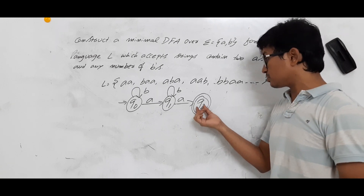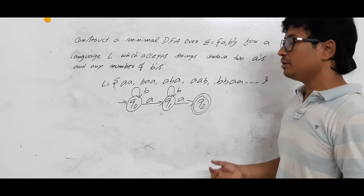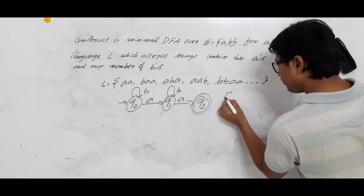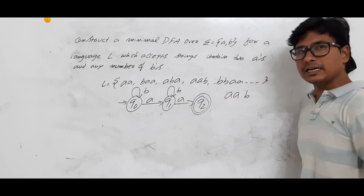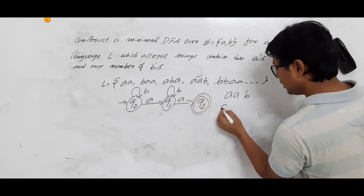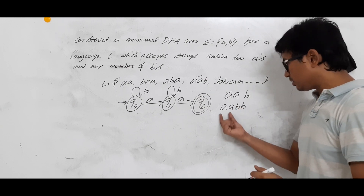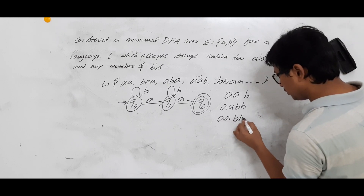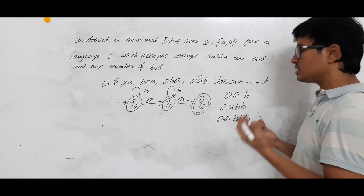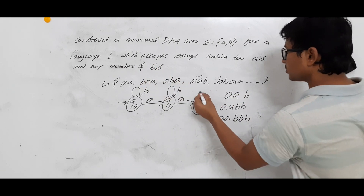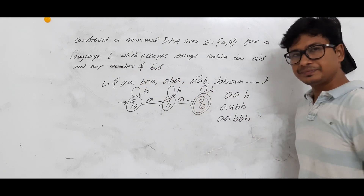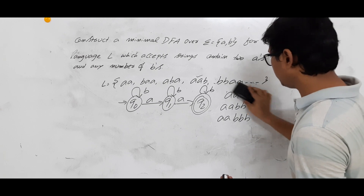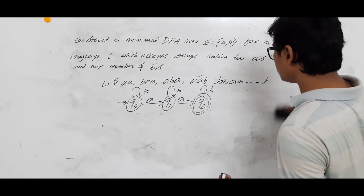The DFA is not yet complete because on Q2 we have not defined transitions on B and A. For B: AAB should be accepted, and AABB should also be accepted — after two A's, any number of B's can follow. So I will add a self-loop on B at Q2. This handles AA followed by any number of B's.